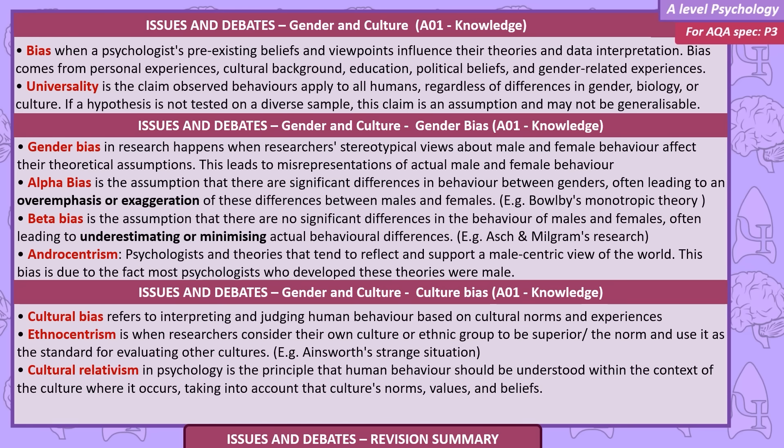Cultural bias refers to interpreting and judging human behaviour based on cultural norms and experiences. Ethnocentrism is when researchers consider their own culture or ethnic group to be superior, or the norm, and use it as a standard for evaluating other cultures — for example, Ainsworth's Strange Situation. Cultural relativism in psychology is the principle that human behaviour should be understood within the context of the culture where it occurs, taking into account that culture's norms, values and beliefs.